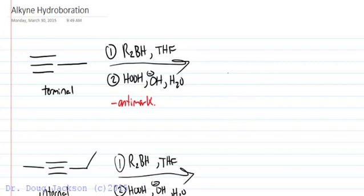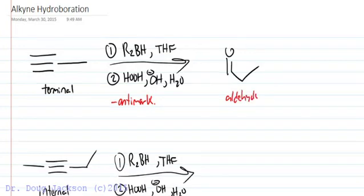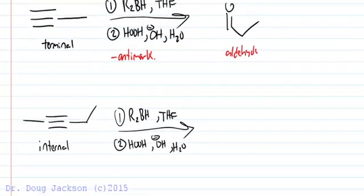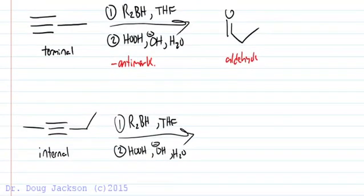We can draw it right side up the way we normally would — an aldehyde. In skeletal structure, the H is not necessary, so we get something a little different than normal. Now with our internal alkyne, it's very similar to an acid-catalyzed hydration or a mercury-catalyzed hydration, where we form ketones.